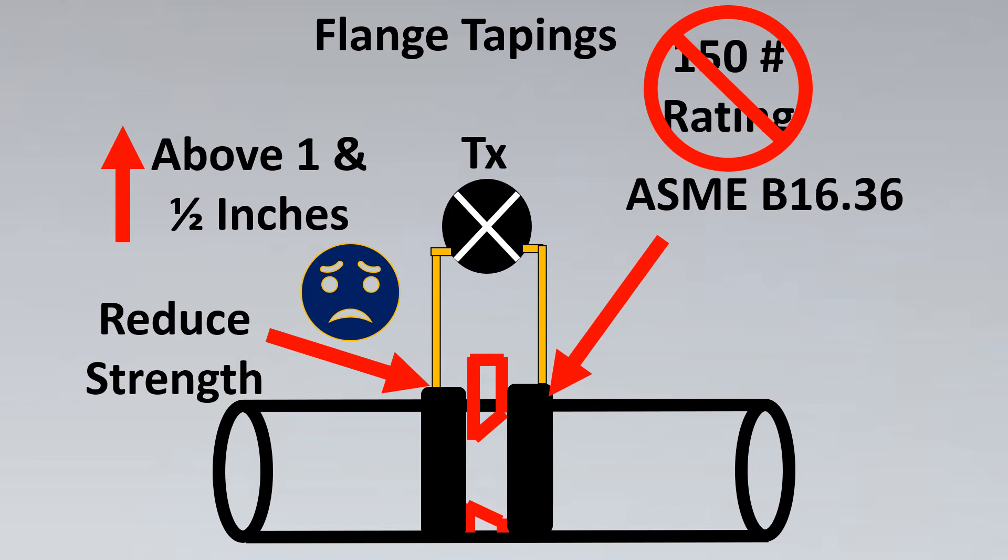So the ASME B16.5 standard which is the normal standard for flanges has rating starting from 150. However ASME B16.36 standard which is especially made for orifice starts with 300 rating.